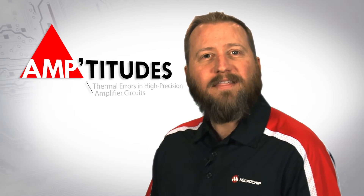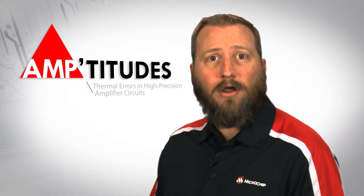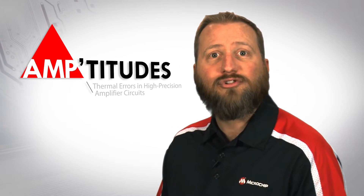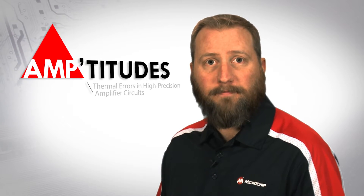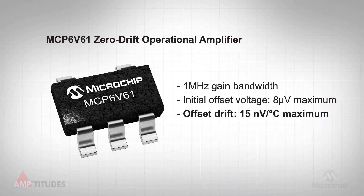One of the key benefits of the zero drift architecture is extremely low drift over temperature. For example, the MCP6V61 zero drift op amp specifies a maximum drift of 15 nanovolts per degree C, which is over a hundred times better than that of a general purpose amplifier, and that's being conservative.